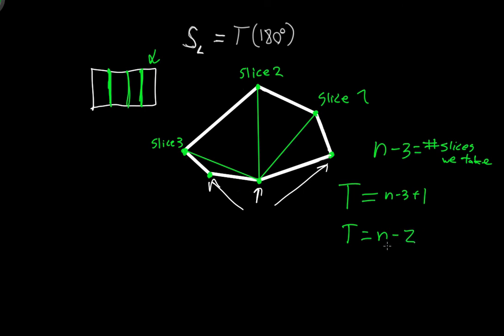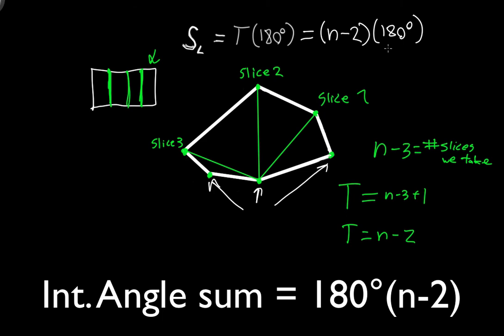Going back to what we were originally trying to find: the total angle sum S equals T times 180 degrees. Since T equals n minus 2, the formula is S equals (n minus 2) times 180 degrees, and that's the total number of degrees in your polygon. I hope this was a clear explanation. If you have any questions, feel free to leave them in the comments. Thanks for watching.